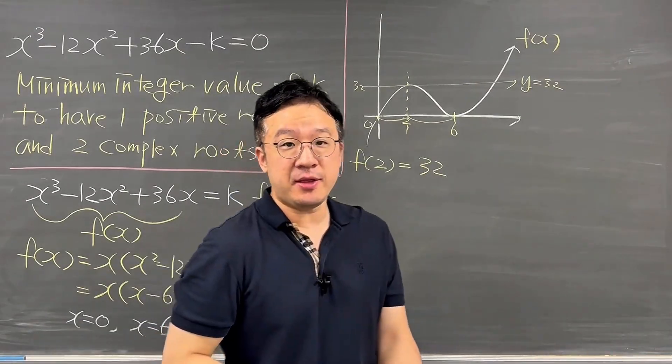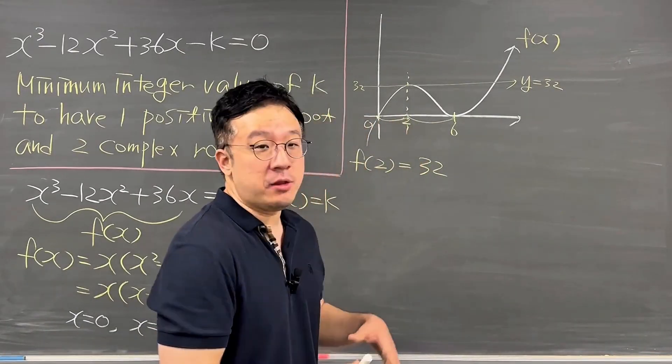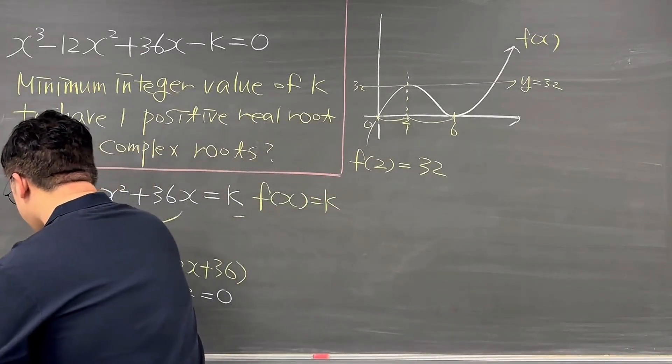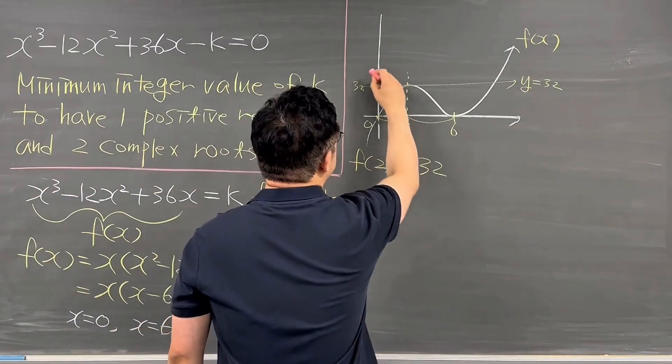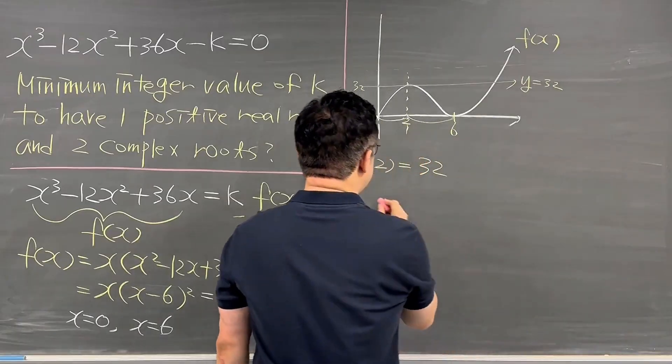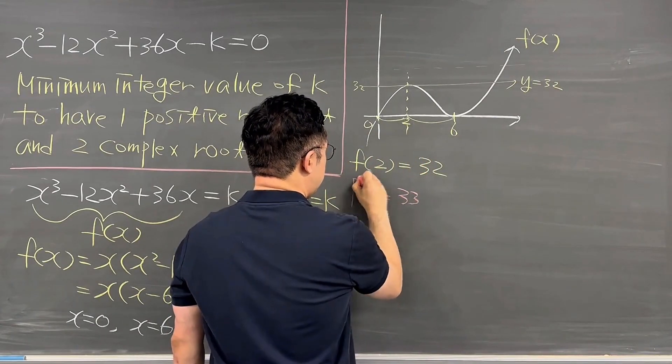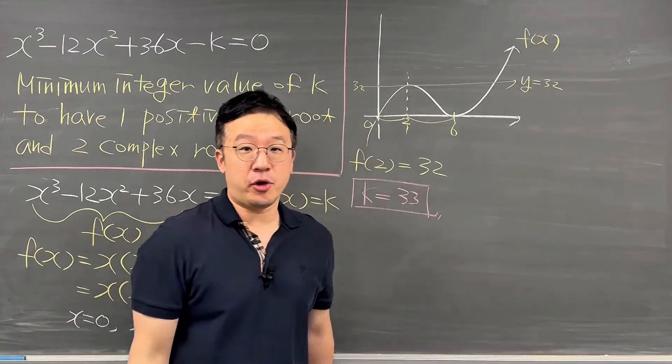We're talking about the minimum integer value of k, so that we have one positive real root and two complex roots. That should be looking just like this. So that's why that k value is equal to 33. Solved pretty quickly.